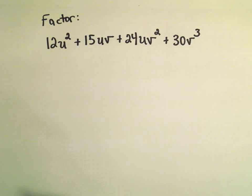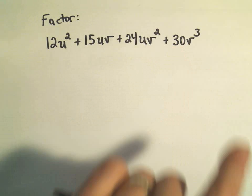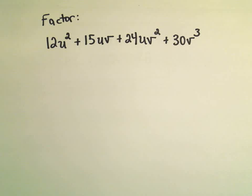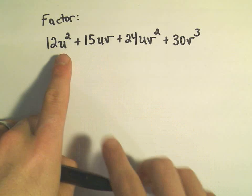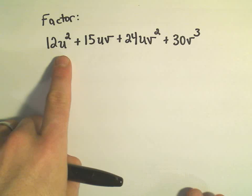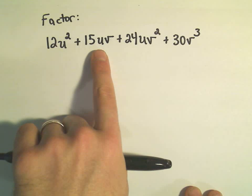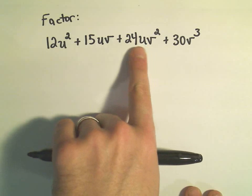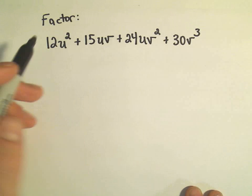The first thing I always ask myself is, what's the greatest common factor of all the terms that are present? In this case, notice there's no variables in common between all four terms. The first one has a u, the second one has a u and a v, the third one has u and v's, and the fourth one only has v's, so we can't factor out any variables.